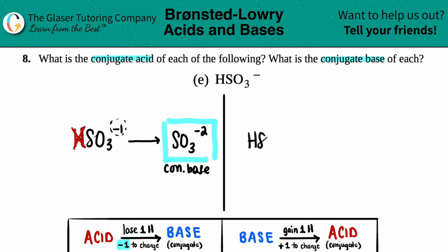So HSO3 minus. On the flip side, an acid is always one hydrogen more. So all you got to do is just gain one hydrogen. There was only one hydrogen. So bump it up. Now it's going to be two hydrogens. All the other elements come along for the ride. So SO3.